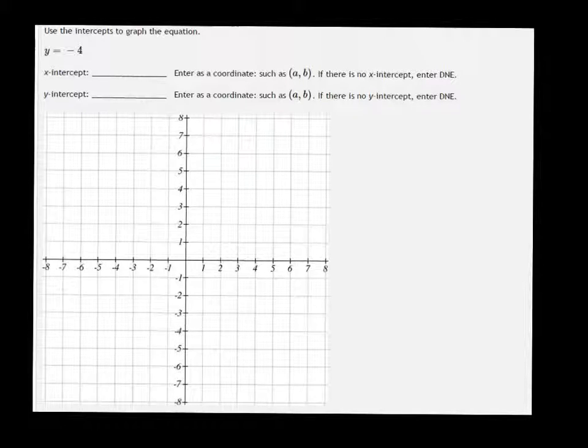So y equals negative 4, the point is right here. You can see my little dot there. So we want to draw a horizontal line through that point. That's our graph.